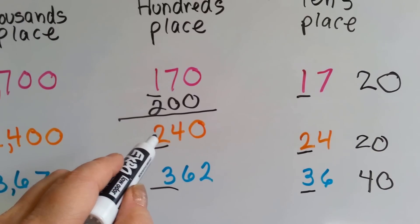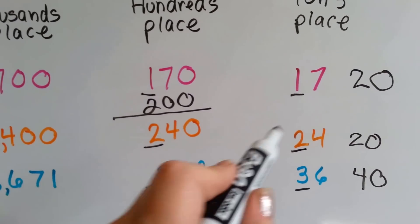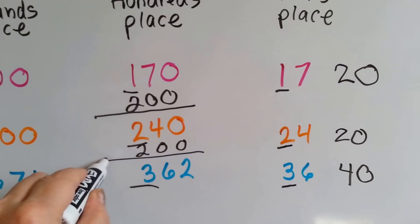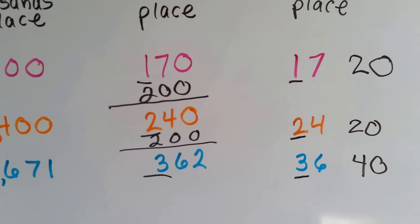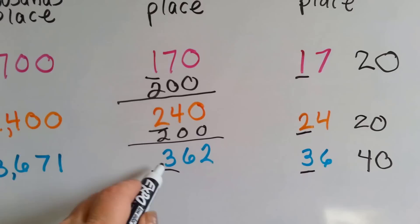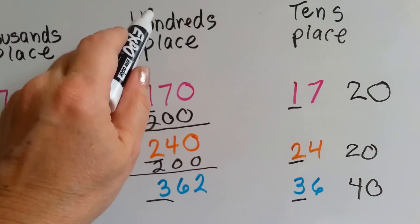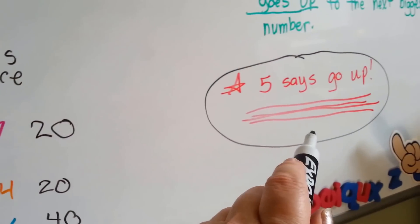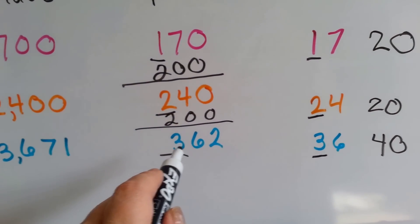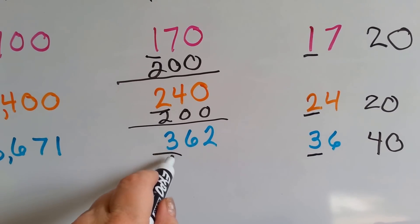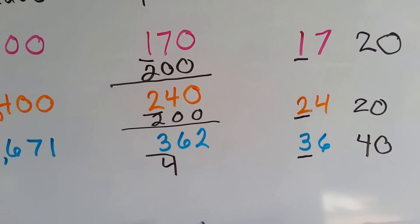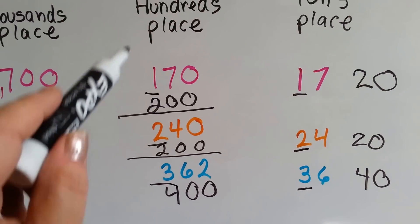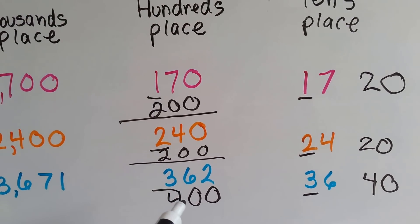Let's try this one. The 4 tells the 2 to stay the same because it's not as big as 5. The 2 is going to stay the same, 4 is finished with its job and it becomes a 0, and everybody behind it becomes a 0. 362 rounded to the hundreds place: the number to the right is a 6. Remember our red rule — 5 or bigger says go up. 6 is bigger, so 3 goes up to 4. 6 is finished and becomes a 0, everybody behind it becomes a 0. 362 rounds to 400.